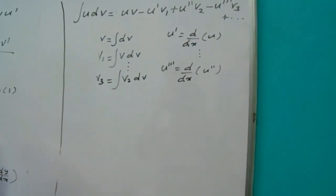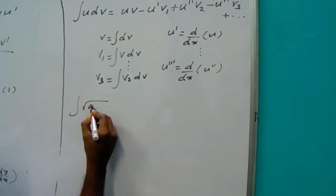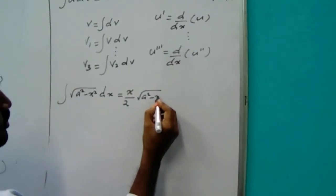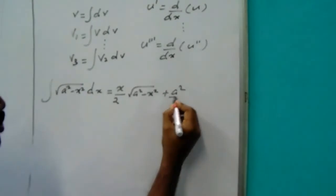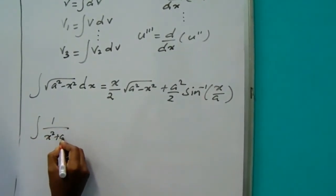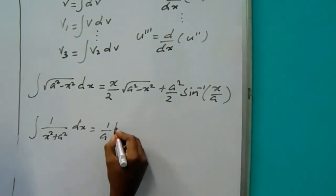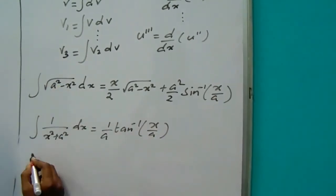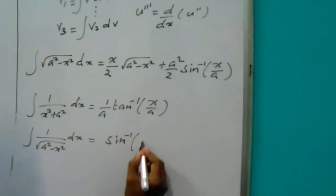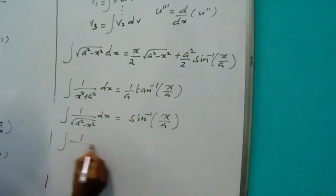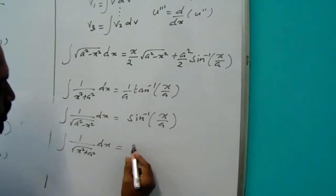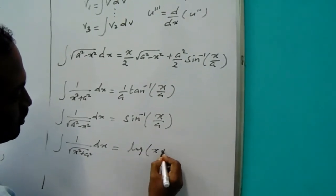Some very important integration formulas: the integral of √(a²-x²) dx equals x/2 times √(a²-x²) plus a²/2 times sin⁻¹(x/a). The integral of 1/(x²+a²) dx equals 1/a times tan⁻¹(x/a). The integral of 1/√(a²-x²) dx equals sin⁻¹(x/a). The integral of √(x²+a²) dx uses log of (x + √(x²+a²)).